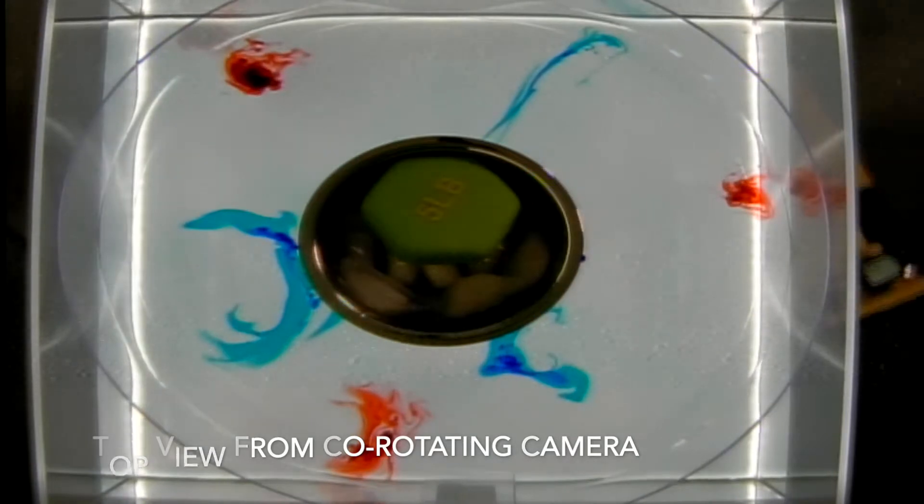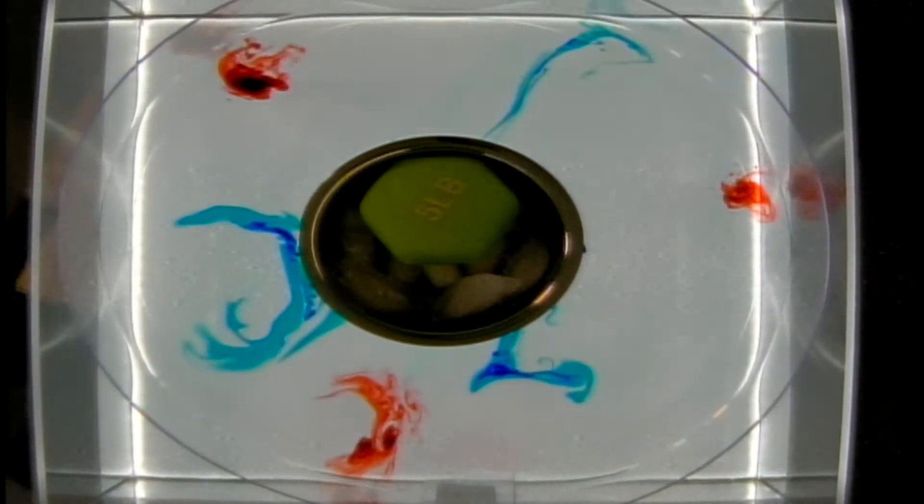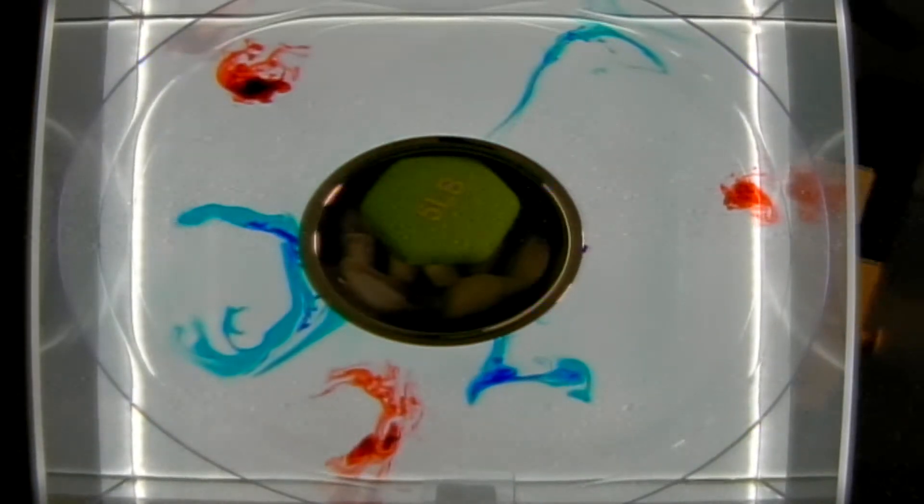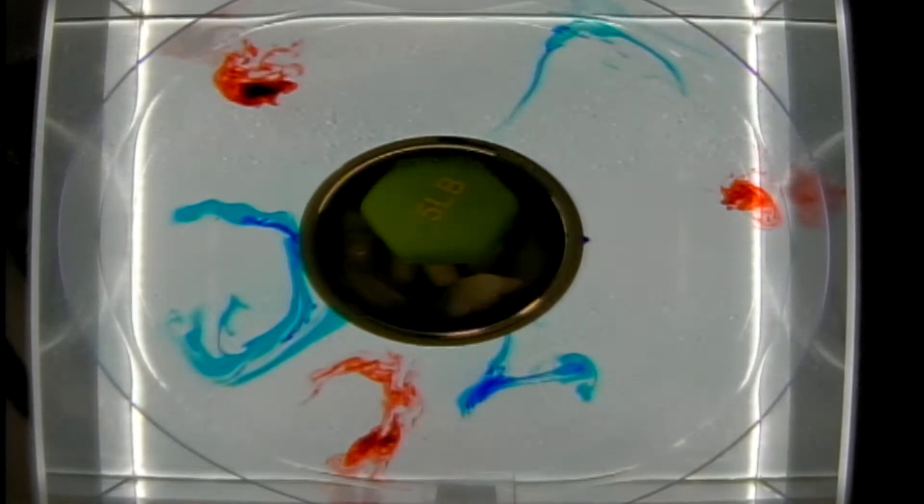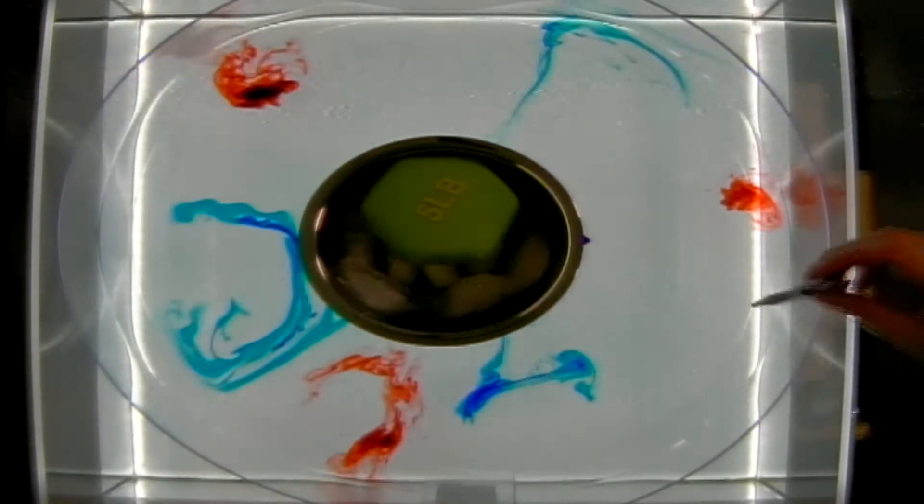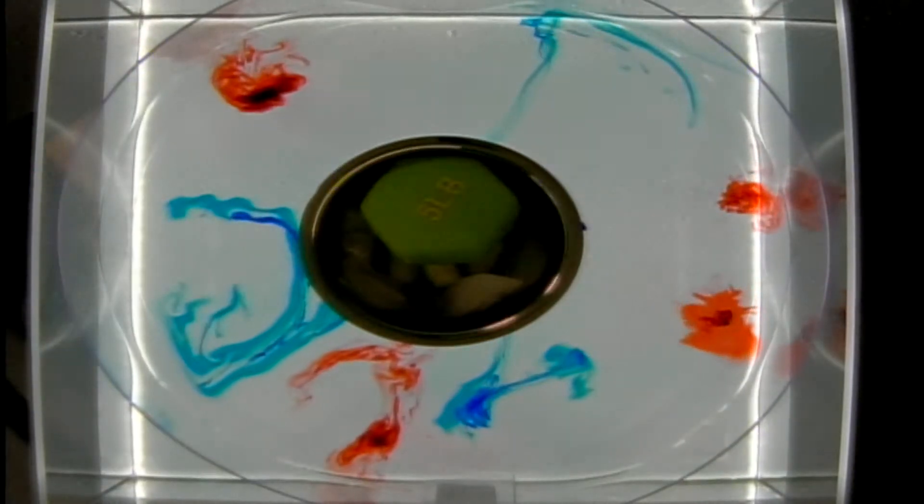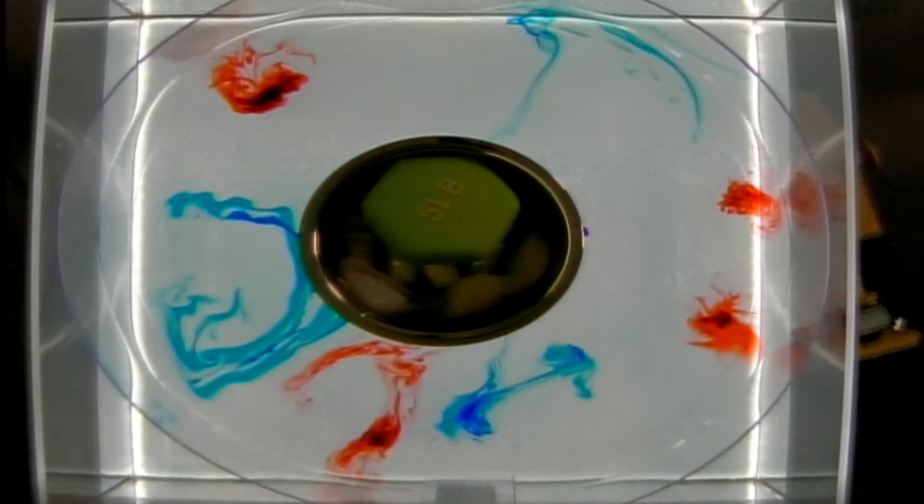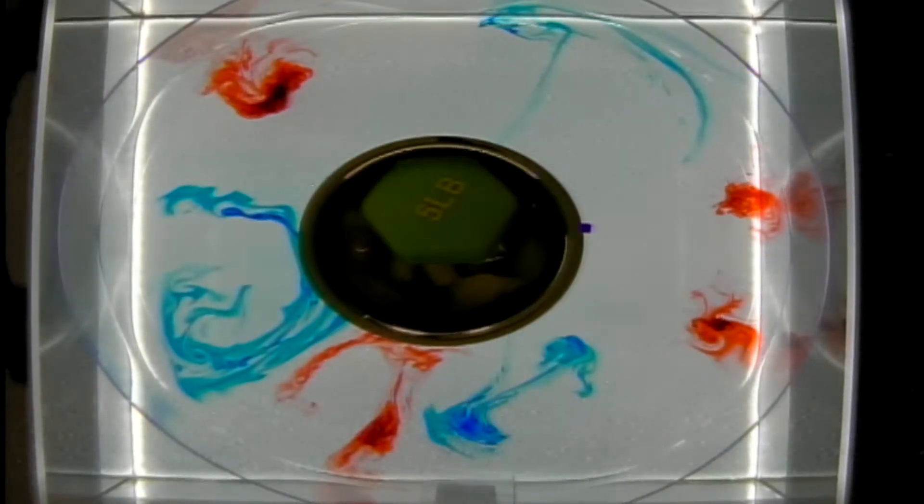Here in our top view from our co-rotating camera, we see that the color dye we have inserted—blue dye for the cold water near the center and red for the warm water near the edge—have started to move in some spiraling patterns. The red warm dye is moving towards the cold center of the tank and the blue cold dye is moving towards the edge of the tank.